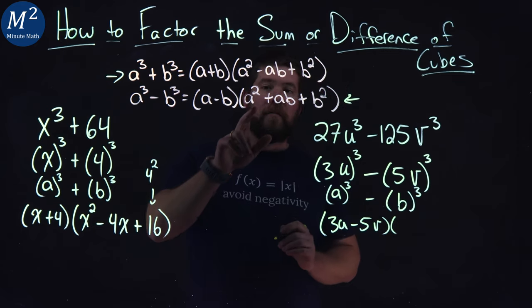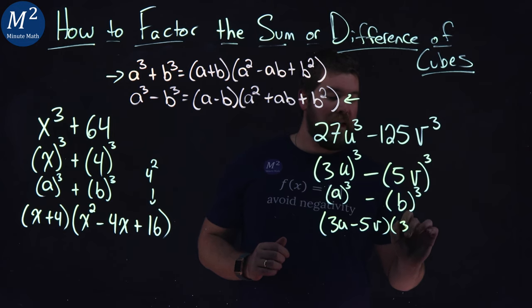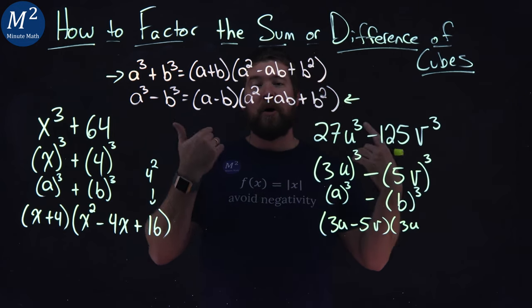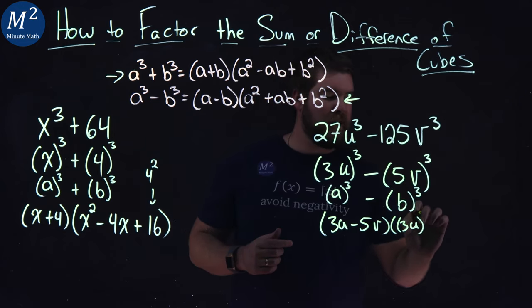After that we have a squared. So we want a 3u. Now remember this is 3u all squared. We're going to simplify in a second.